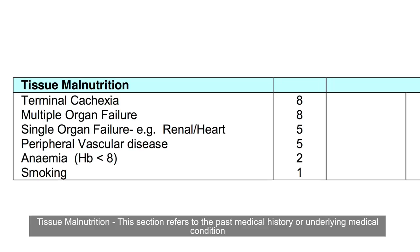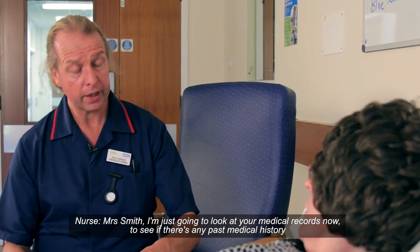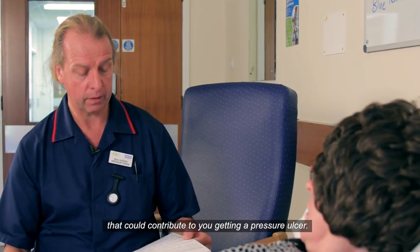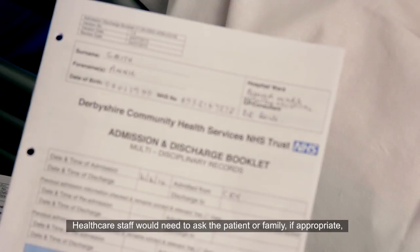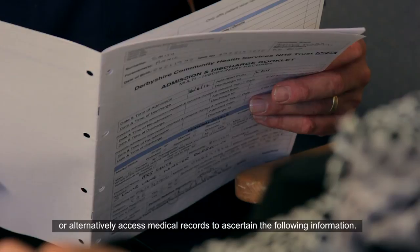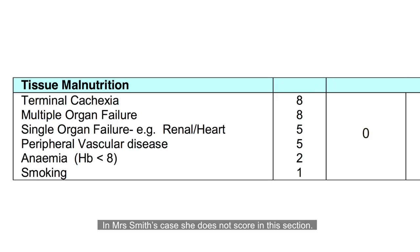Tissue malnutrition. This section refers to past medical history or underlying medical conditions which could impact on the risk of pressure damage. This could be one or multiple conditions. Healthcare staff would need to ask the patient or family if appropriate, or alternatively access medical records to ascertain the relevant information. In Mrs. Smith's case, she does not score in this section.